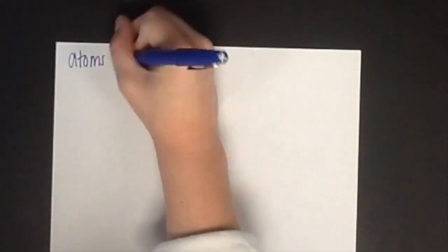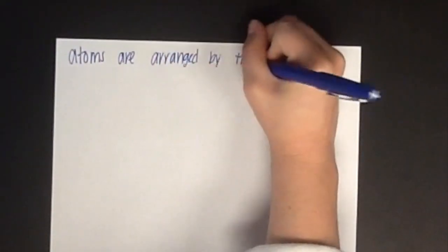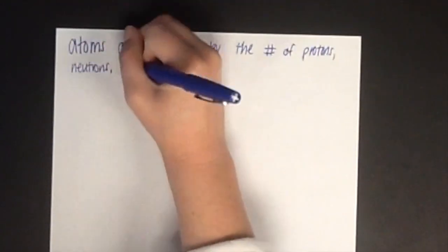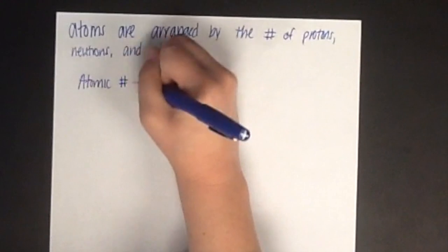Atoms are arranged by the number of protons, neutrons, and electrons that they contain. The atomic number is the number of protons, and the mass number is the total number of nucleons, which are protons and neutrons.